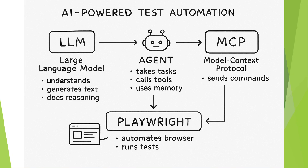Now let's understand why we use Playwright for AI test automation. Playwright is a modern end-to-end web testing framework developed by Microsoft. It lets testers write scripts in JavaScript, Python, C#, and more, which can run browsers like Chromium, Firefox, and WebKit in a cross-platform way. It handles things like waiting for elements and isolating tests to avoid flakiness. In short, Playwright is an engine for automating a browser.